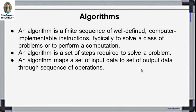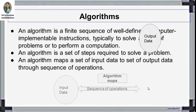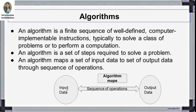Algorithm means simply writing steps in your language to solve a specific problem. The definition of an algorithm is: it is a set of steps required to solve a problem. Here we map the set of input data to the output data through a sequence of operations. An algorithm is a finite sequence of well-defined, computer-implementable instructions, specifically used to solve a class of problems or to perform a computation.